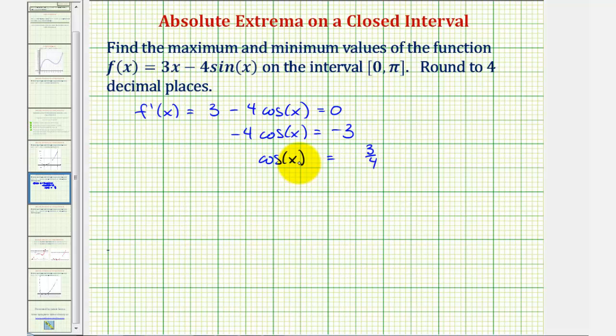So now to solve this equation for x, we'll take the inverse cosine of both sides of the equation. So inverse cosine of cosine x is equal to x. So we have x equals inverse cosine, or arccos of 3/4. And now we'll go to the calculator to get our decimal approximation for x.